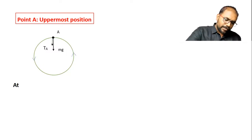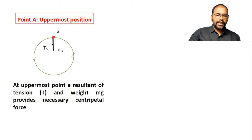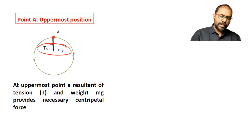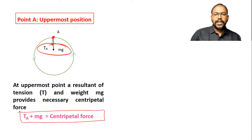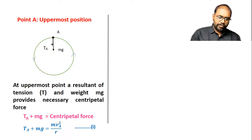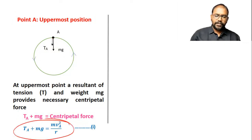At point A, we can write: the necessary centripetal force is provided by the resultant of these two forces — tension and mg — and they are both in the downward direction. So tension at A plus mg gives us the centripetal force. We can write the equation: TA + mg = mv²A / r.